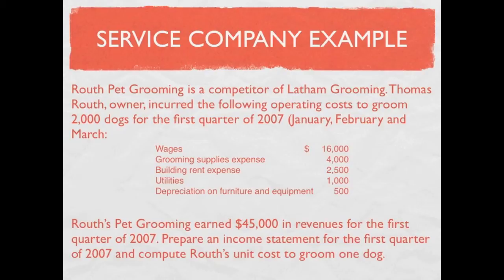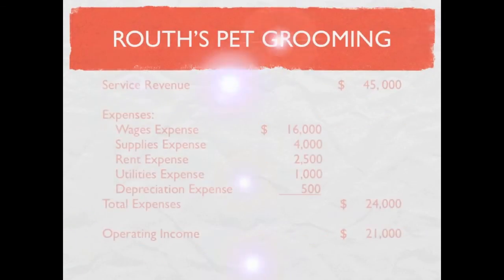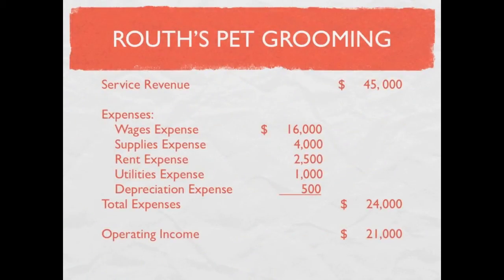We're going to use this information to create Ruth's Pet Grooming income statement. We start with our service revenue — we're providing a service, pet grooming — which is $45,000. Then under that we list all of our expenses: wages, supplies, rent, utilities, and depreciation. All of those expenses add up to $24,000. We subtract those $24,000 worth of expenses from our service revenue to give us our operating income of $21,000.